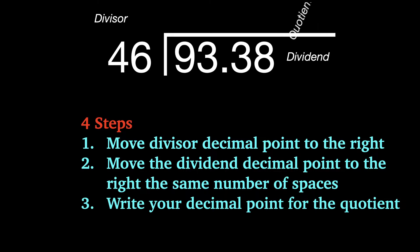Step three is don't forget to write your decimal point for the quotient. You don't have to, it's just a good idea. And make sure that it's lined up between the right place values. Last step is just divide as normal.